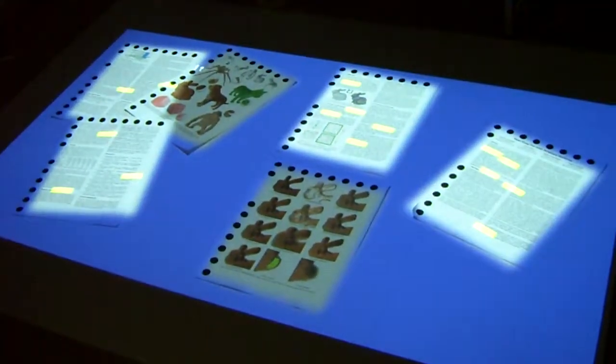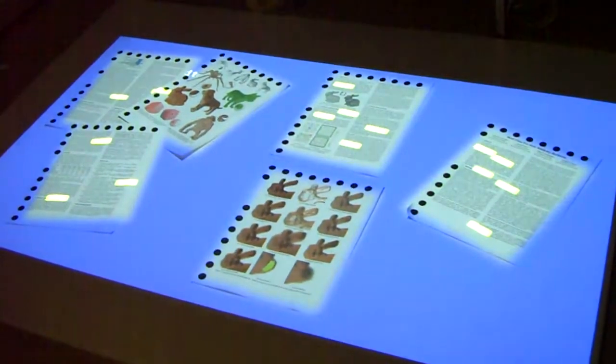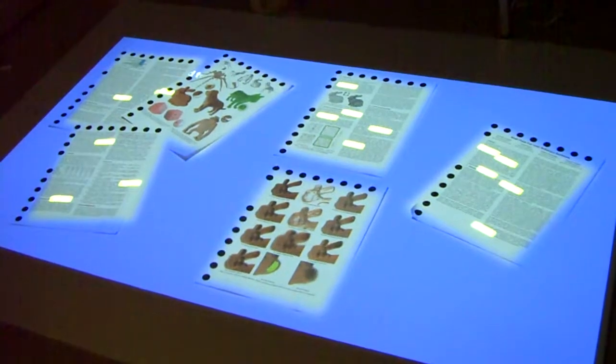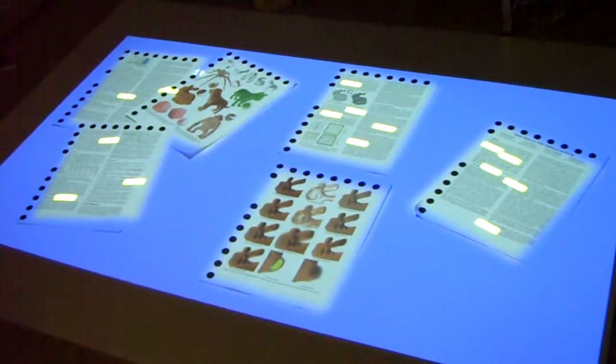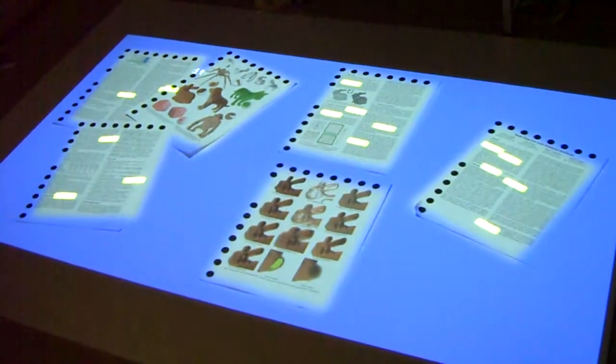Over time, they'll dim down as well. This is just a demonstration showing off what can really happen when you have objects that can be tracked using the fiduciary markers. There's no reason the fiduciary markers have to be black. They could be something that's just infrared absorptive.